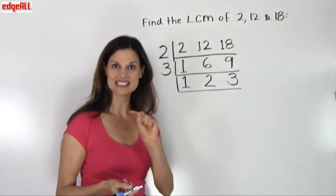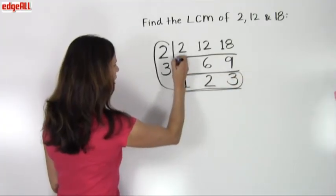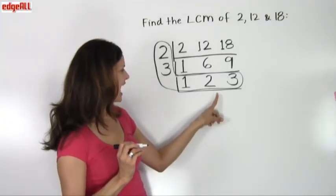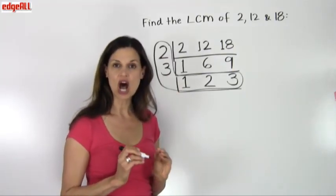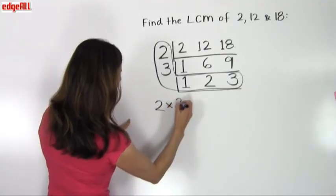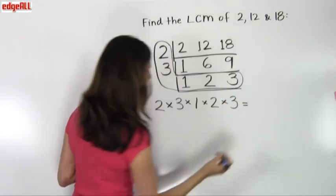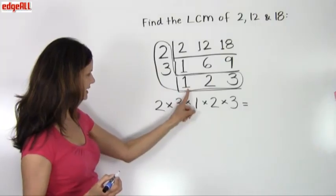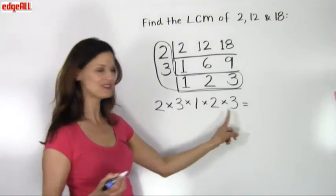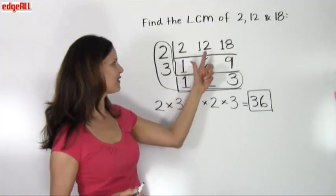To find the least common multiple, I take all the numbers to the left of the ladder and the numbers in the last row — where I couldn't find at least two numbers divisible by a common factor — and I circle those. The least common multiple is all of those numbers multiplied together: 2 times 3 times 1 times 2 times 3. That gives us 2 × 3 = 6, × 1 = 6, × 2 = 12, × 3 = 36. So the least common multiple of 2, 12, and 18 is 36.